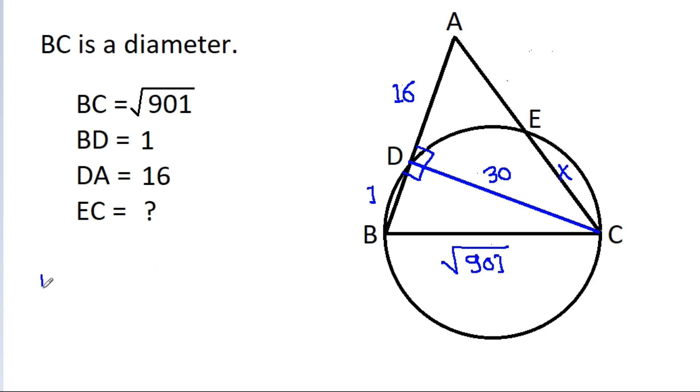AD squared, that will be 16 squared, plus DC squared, that will be 30 squared, will be equal to AC squared. And 16 squared is 256 plus 30 squared is 900 equals AC squared. And we get AC is equal to root 1156, that will be 34.